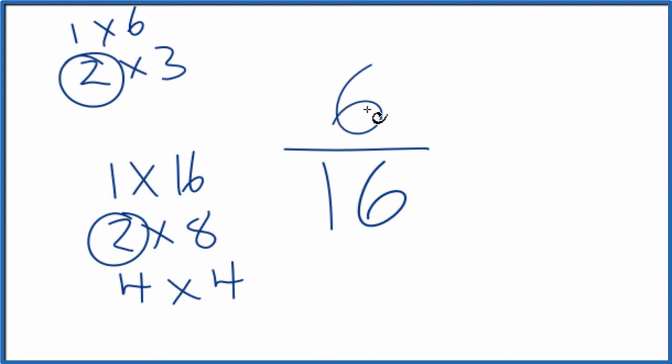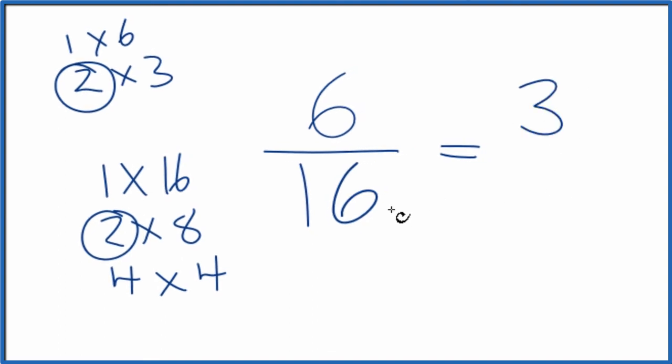So we could divide 6 by 2. That gives us 6 divided by 2 is 3. And 16 divided by 2, that's 8. So we've simplified 6-sixteenths down to 3-eighths. And we can't reduce this any further.